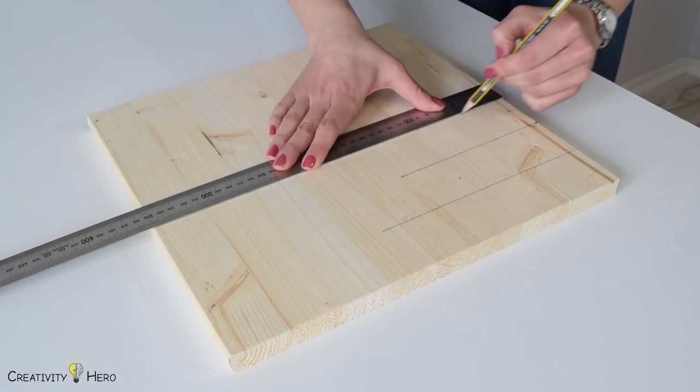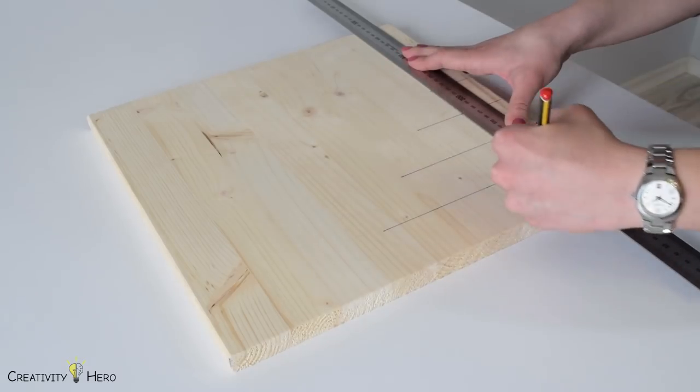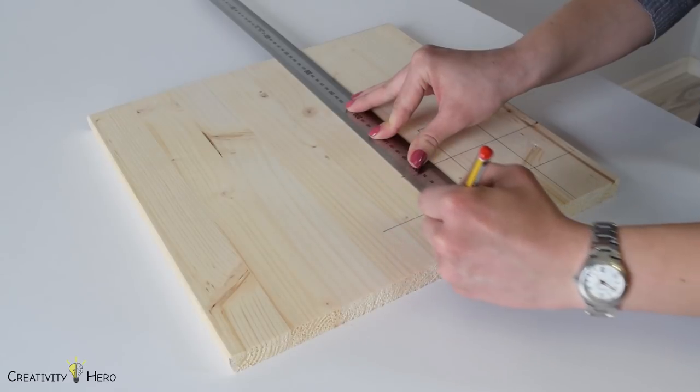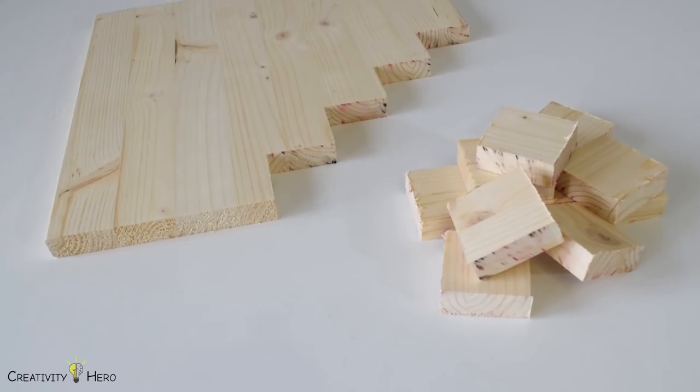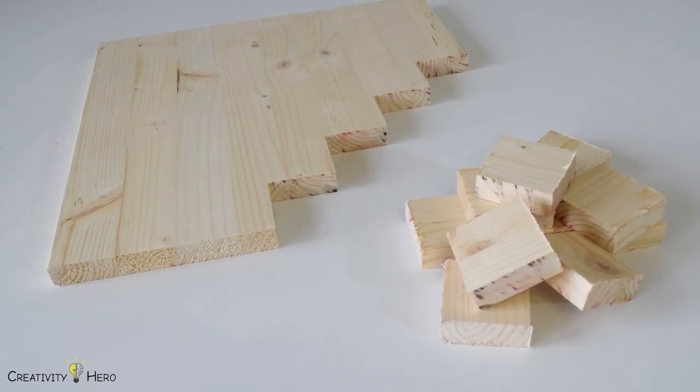I wanted to make a clock that looks like it is falling apart so I drew 10 squares on the bottom right corner and cut them 5 by 5 centimeters.